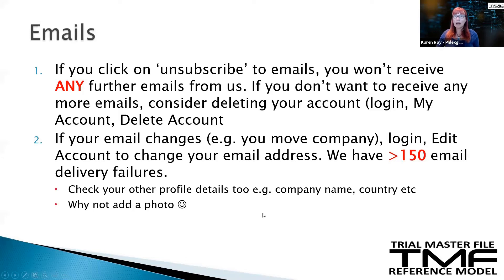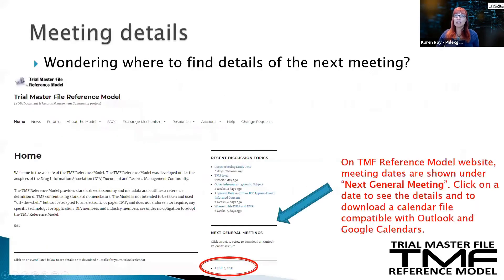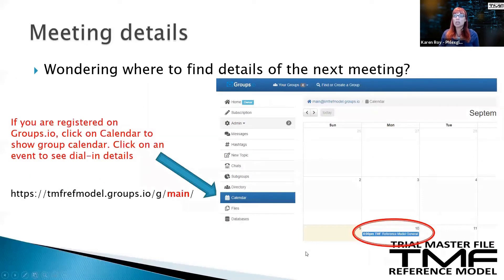Just another quick reminder: if you don't know when the next meeting is, go to our website, tmfreferencemodel.com, and scroll down to the bottom — that's got all the meeting details. If you click on the meeting details, it will allow you to add it to your calendar. If you're in Groups.io, it's on the calendar there as well. Please make sure you find out where the meetings are and stay up to date.